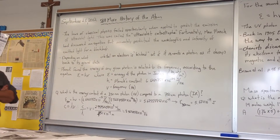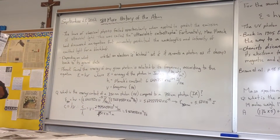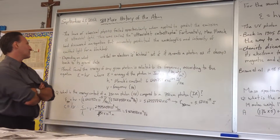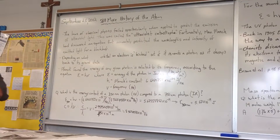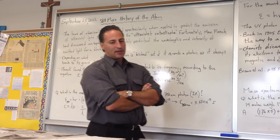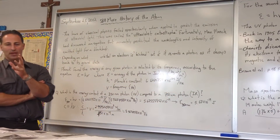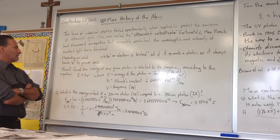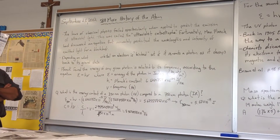The laws of classical physics failed spectacularly when applied to predict the emission of ultraviolet light — this was called the ultraviolet catastrophe. Fortunately, Max Planck had discovered an equation that accurately predicted the wavelengths and intensity of emitted light for a black body. He was able to do this by using the idea that light is composed of photons — discrete small packets of energy emitted whenever light is irradiated from a source. Depending on what orbital an electron is kicked out of, it re-emits a photon as it decays back to its ground state.